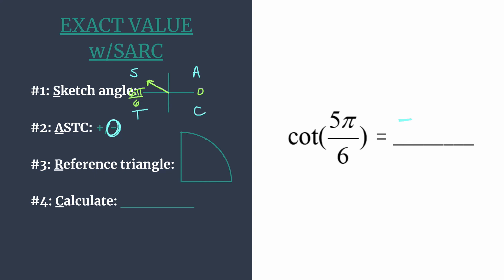Before we move on, if your angle was in quadrant 3, only tangent and cotangent are positive there. And in quadrant 4, cosine and secant are the positive functions.